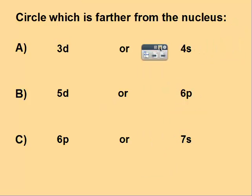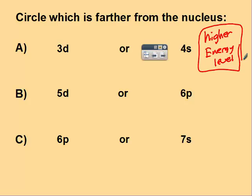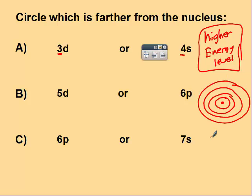If the question asks farther from the nucleus, you look at the higher number. So we're just looking for which one is the higher energy level. So 3 or 4? The fourth is farther from the nucleus.